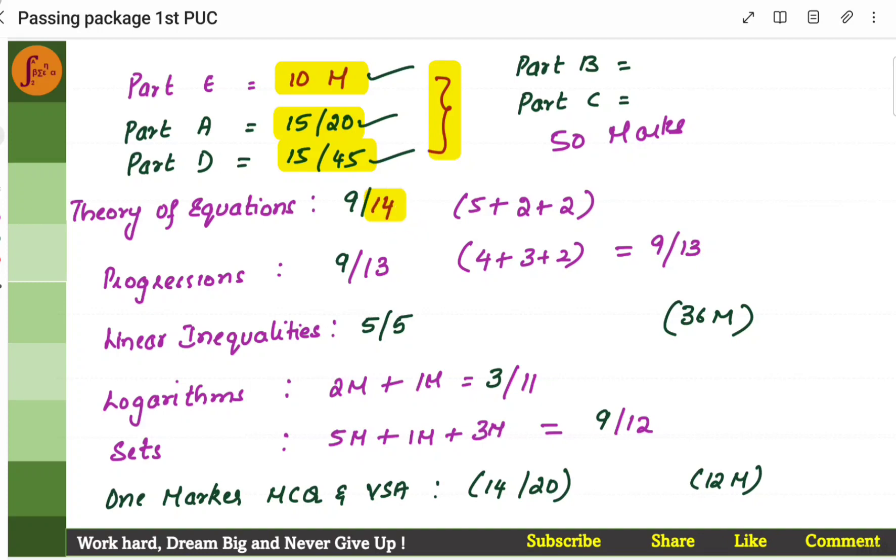From theory of equations chapter, 14 marks of questions will come. So, at least 9, we should be able to get 9 marks. From progressions, again, 13 marks. Again, we should be able to at least get 9. From linear inequalities, 5 marks. We should be able to get 5 out of 5. Logarithms, 11. You get totally 11 marker questions. At least 3, we should be able to target. 3 marks. At least. This is very less. Sets, 12 marker. Try to get 9 marks from this 12 marker. And then, 1 marker, MCQ and short answers, 14 to 20. For sure, we'll have to put so much of effort that we can be sure of getting 14 to 15 marks out of 20.